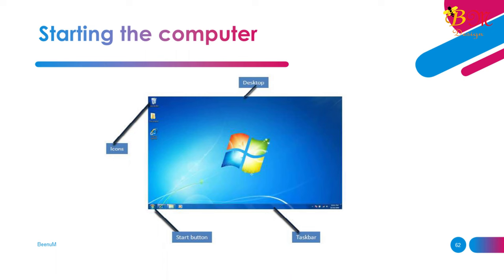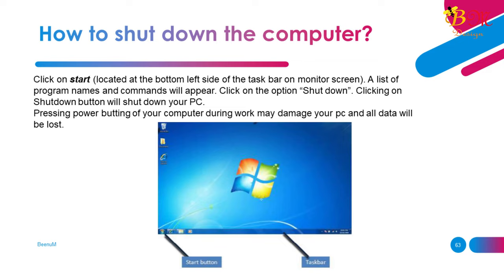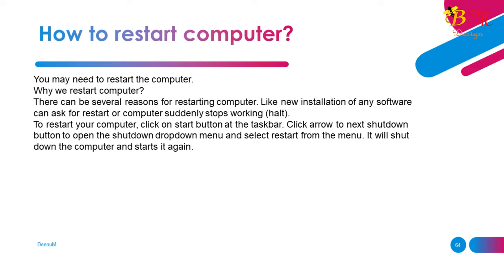How to shut down the computer: Click on Start, located at the bottom left side of the taskbar. A list of program names and commands will appear. Click on the option Shut Down. Clicking the Shut Down button will shut down your PC. Pressing the power button during work may damage your PC and all data will be lost. How to restart the computer: Click on the Start button, click the arrow next to the Shut Down button to open the shutdown drop-down menu, and select Restart. It will shut down the computer and start it again.